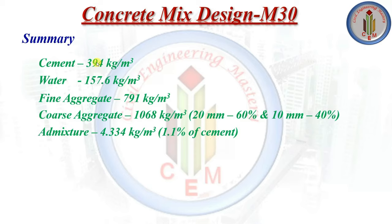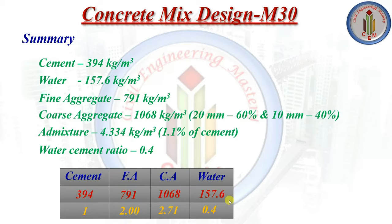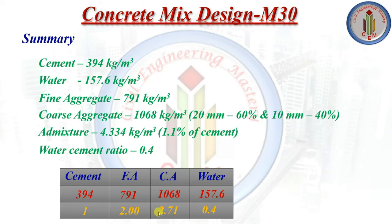To summarize the M30 mix design: cement = 394 kg/m³, water = 157.6 kg/m³, fine aggregate = 791 kg/m³, coarse aggregate = 1068 kg/m³, water-cement ratio = 0.4. The final mix proportion is 1 : 2 : 2.71 (cement : fine aggregate : coarse aggregate). I hope you found this video helpful. Please comment if you have any queries, and don't forget to subscribe for more videos. Thank you for watching.